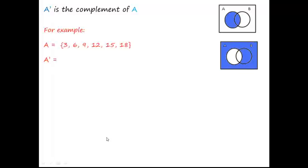For example, we said A was all the multiples of 3 under 20. So not A is just going to be all of everything that's not a multiple of 3 under 20. So it's going to be 1, 2, 4, 5, 7, 8, 10, 11, 13, 14, 16, 17, 19, and 20.